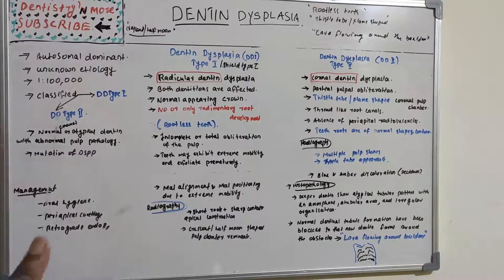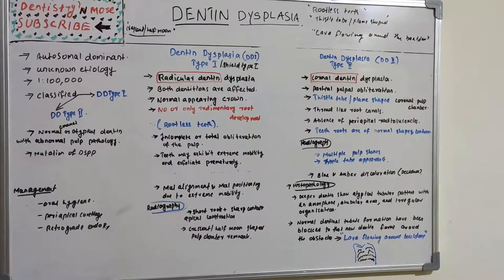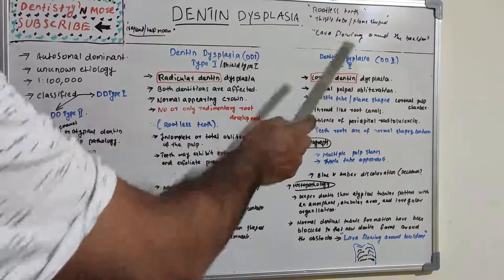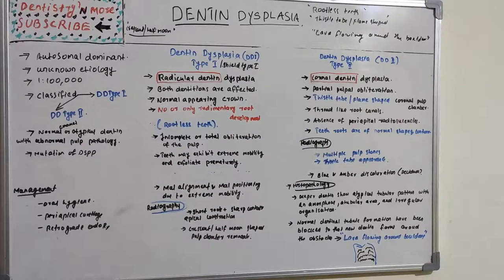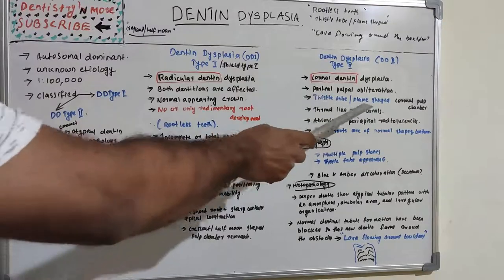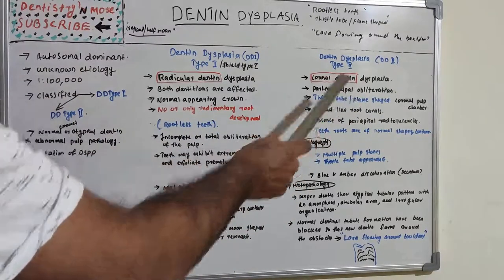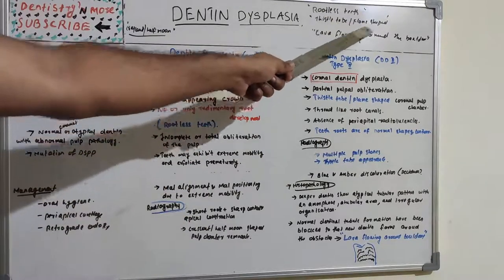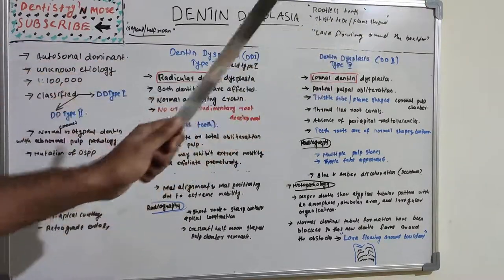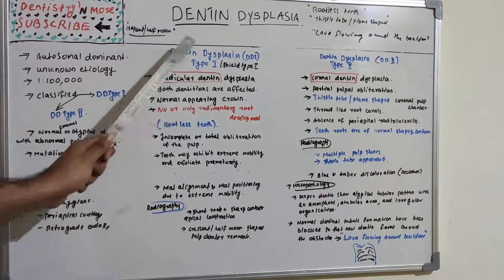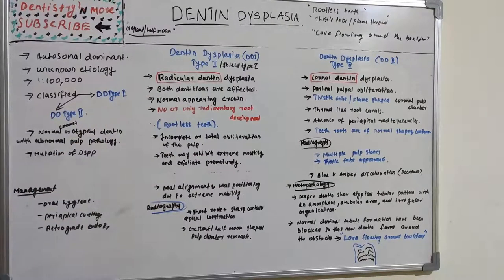Dentine dysplasia Type 2 is coronal dentine dysplasia, where the problem lies in the coronal dentine. Pulpal obliteration will be partial, and the peculiar appearance of the coronal pulp chamber is a thistle tube or flame shape. This thistle tube or flame-shaped pulp chamber is the characteristic feature of Type 2.